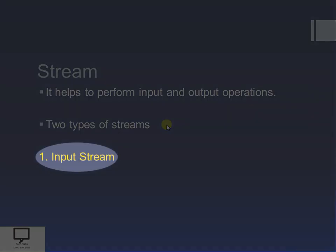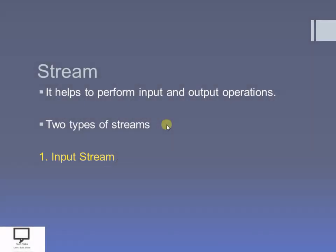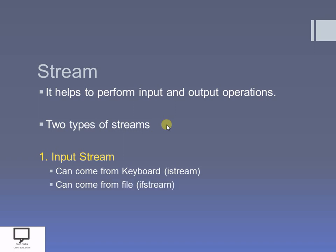The first one is input stream. Input means from where you are getting the input. You can take the input from a keyboard using istream. Another source from where you can take the input is files. Whenever you want to take the input from files, you have to use ifstream. So you can take input from istream and ifstream.